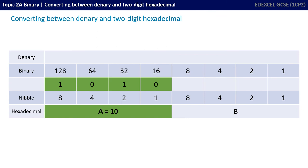We'll start with the left-hand hexadecimal digit first, which is an A. We know that needs to turn into one nibble, so A needs to turn into four bits. A represents 10, and that's an 8 and a 2. So we've got a 1 in the 8 column, followed by a 0, followed by a 1 in the 2 column, followed by a 0. 8 and 2 is 10, or A in hex.